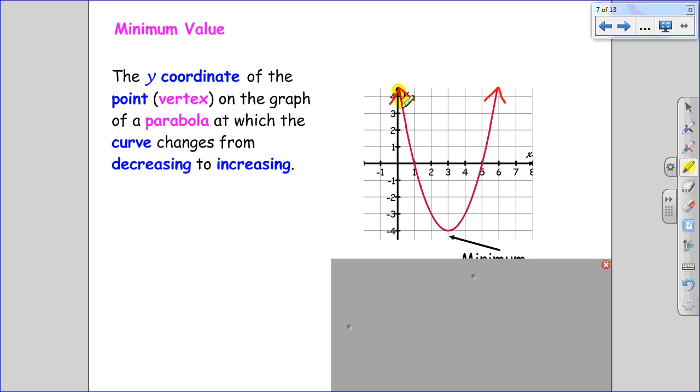So if we look, the y-values of the function are decreasing until we get to the minimum. When we get to the minimum, it's not doing either, and then they start increasing again after that, the y-values are getting bigger. So our minimum of this graph is y equals negative 4.